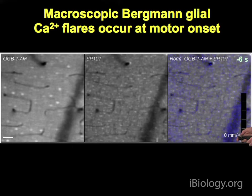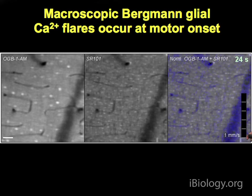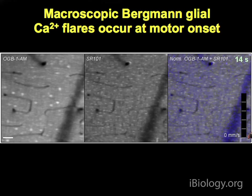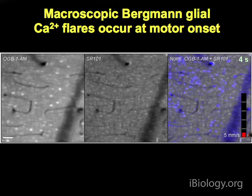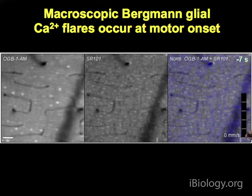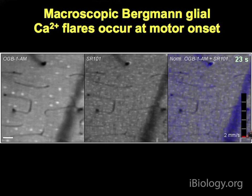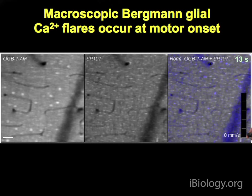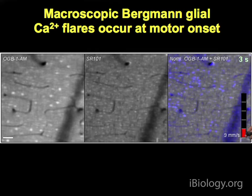An example video shows Bergman glia — the sole type of astrocyte in the molecular layer of the cerebellar cortex. The left panel shows calcium imaging data from the Bergman glia; the middle panel shows a red marker selectively labeling astrocytes; the right panel shows the overlay. Blue indicates calcium activation. When the mouse begins to run, the entire optical field turns blue, indicating widespread activation of the gap-junction-coupled Bergman glial networks in the cerebellar cortex — visualizing network activation in glia in a behaviorally triggered fashion.